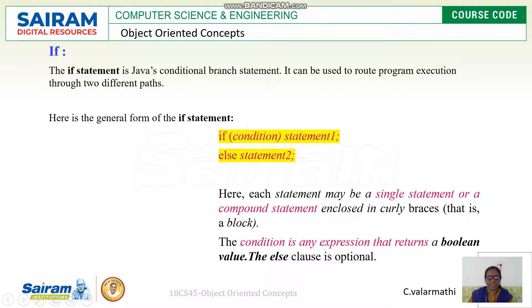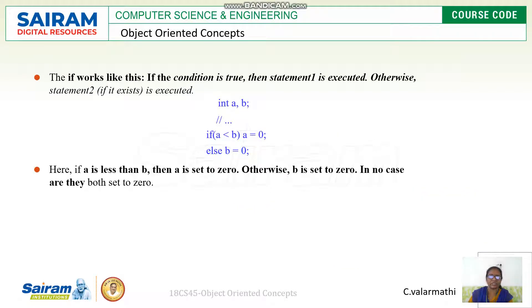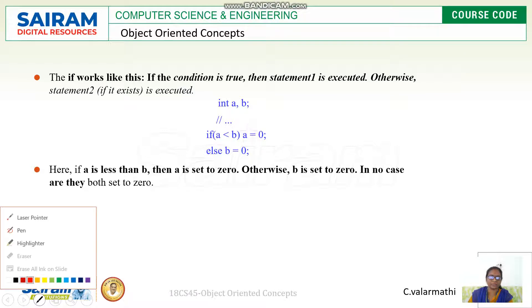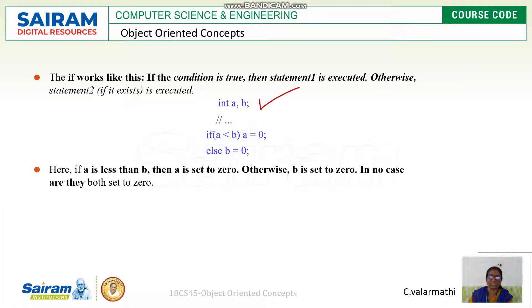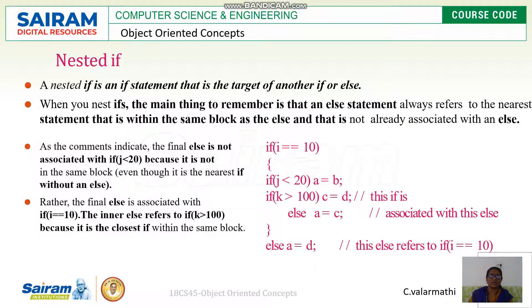The general syntax of if: if a condition is true, statement one will be executed; otherwise statement two in the else part will be executed. It evaluates a boolean value. For example, with two integer variables a and b — if a is less than b, then a is assigned zero; otherwise b is assigned zero.